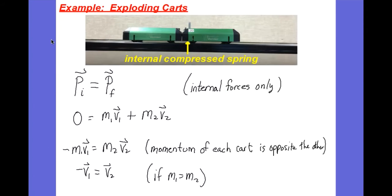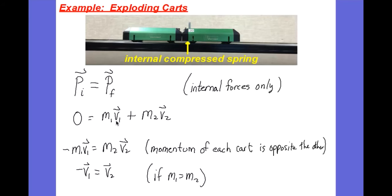Let's look at another example: exploding carts. I have two carts. One of the carts has an internal spring that I've compressed, and I'm going to push a release button and the spring is going to push the carts apart. Cart A pushes on cart B, cart B pushes on cart A. They experience the same force for the same time, so their change in momentum will be the same but in opposite directions. The law of conservation of momentum tells us the momentum won't change. So whatever momentum we have at the beginning — if they're at rest, that zero momentum — will equal the final momentum, which will be the sum of the momentum of each cart.